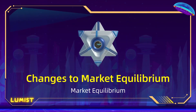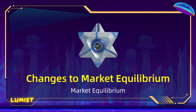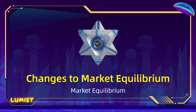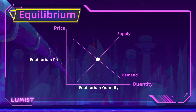Hi guys, welcome to Loomis. This video is about changes to market equilibrium. Previously, we learned that the market equilibrium occurs at where supply and demand intersect. Now, we're going to take a look at changes in this intersection point if demand or supply, or maybe both curves shift.